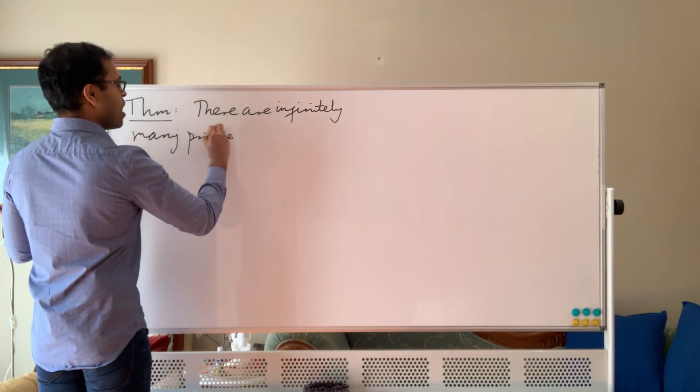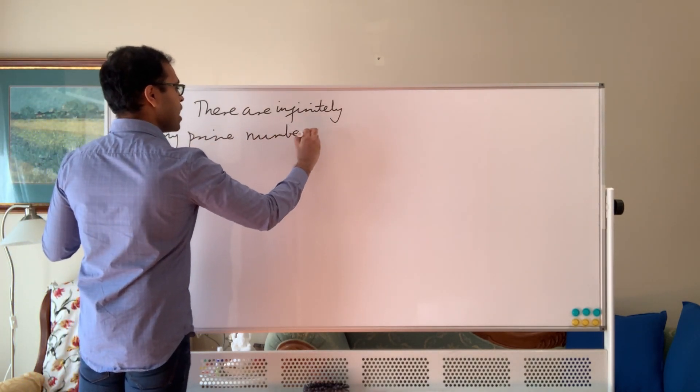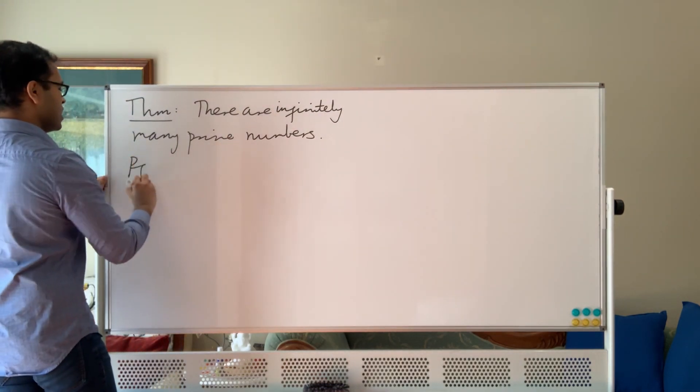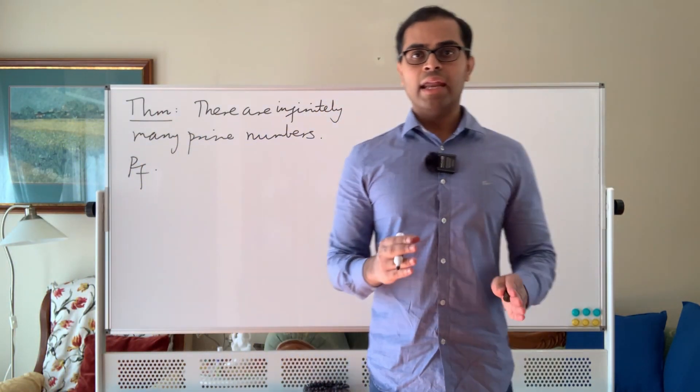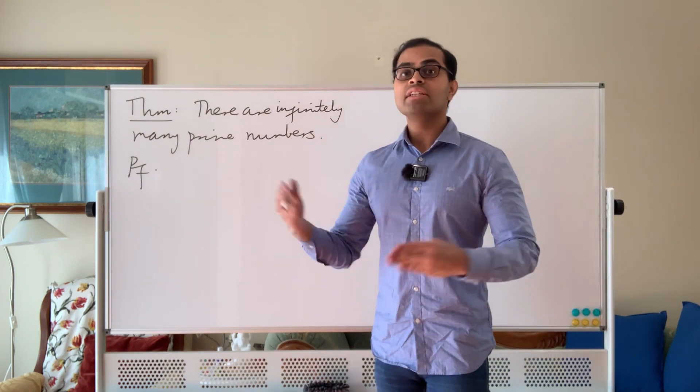So how are we going to prove the theorem? Here's how Euclid proved the theorem. What he did was he basically said let's suppose we have a list of prime numbers.